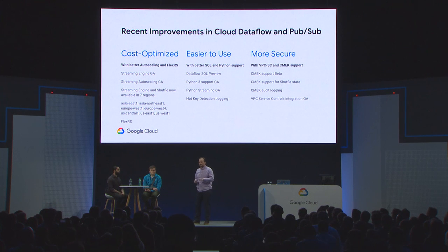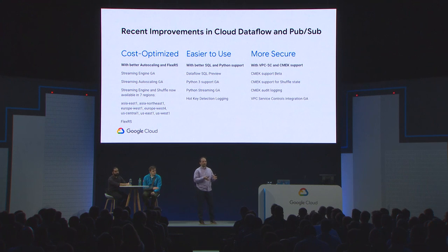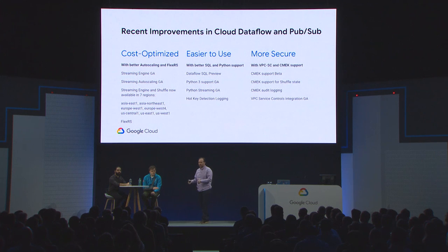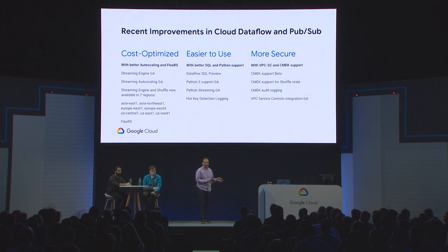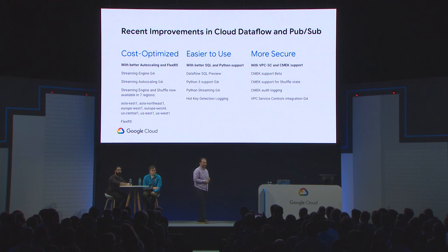Now let's talk about recent improvements in PubSub and Dataflow over the last six months. We bucketed them into three major investment areas: improving cost profile, improving usability, and improving security. On the cost side, we launched Streaming Engine and Streaming Autoscaling in GA. They are now available in seven regions — two European, two Asian, and three US ones — and our goal is to deploy them everywhere.